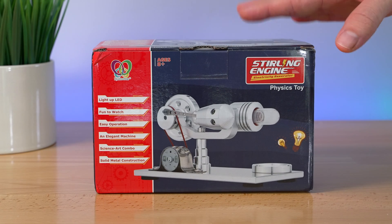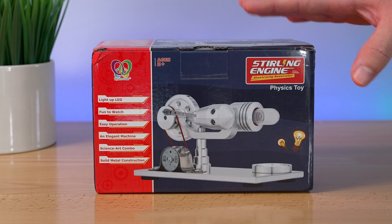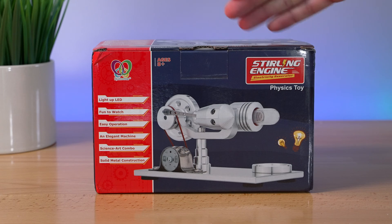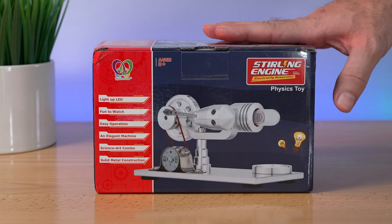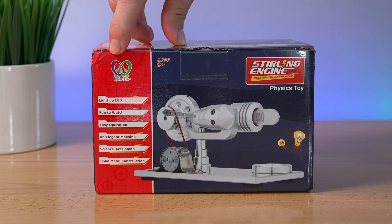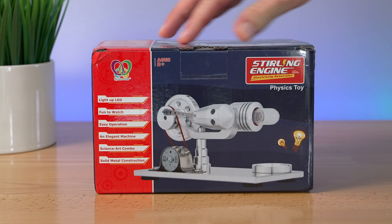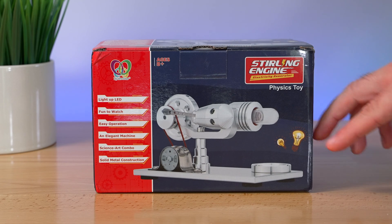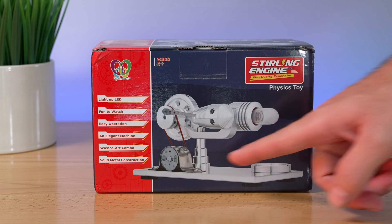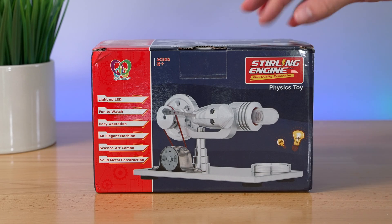All right guys, so I'm pretty excited about this thing because it is a functional motor and even though it's a toy, it is quite unique and interesting how it operates. So the one we got here is from a company called Juno Star and it is a Stirling engine with a generator, a little motor that generates some power. So that's pretty interesting.